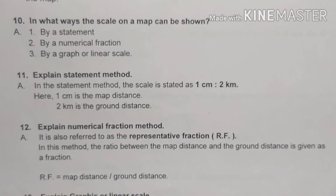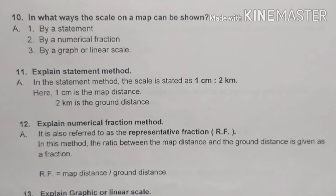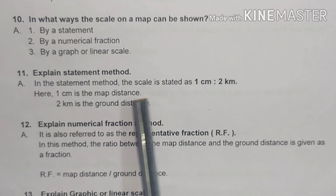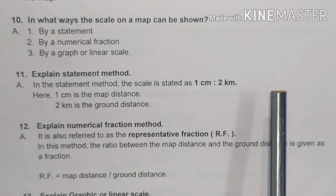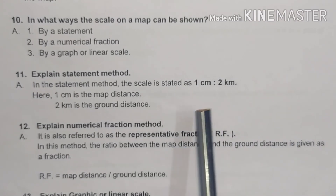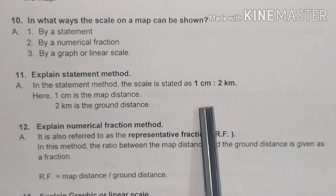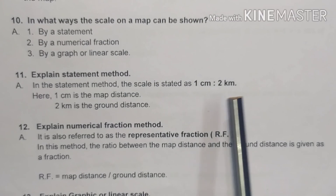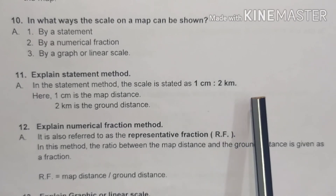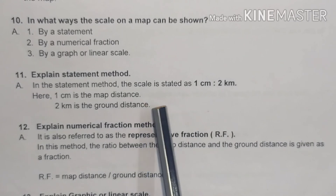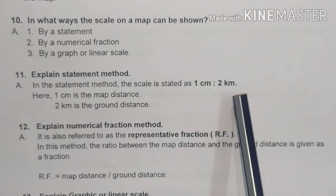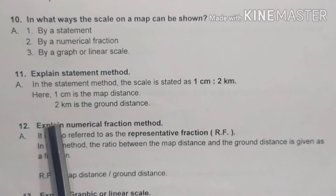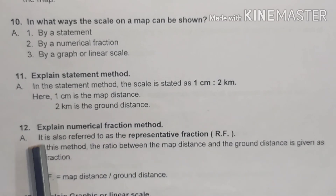Eleventh question: explain the statement method. In the statement method, the scale is stated as '1 centimeter is to 2 kilometers.' This means each centimeter on the map is equivalent to 2 kilometers on the ground. Every 1 centimeter of map distance equals 2 kilometers of ground distance. Here, 1 centimeter is the map distance and 2 kilometers is the ground distance.